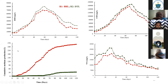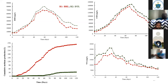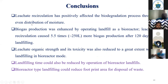The key result shows cumulative methane production over 120 days: the dry-tomb conventional landfill produced very little methane, whereas the bioreactor landfill showed almost three to four times more methane gas production, which could be utilized for energy procurement. The conclusion is that leachate recirculation has positively affected the biodegradation process through even moisture distribution.